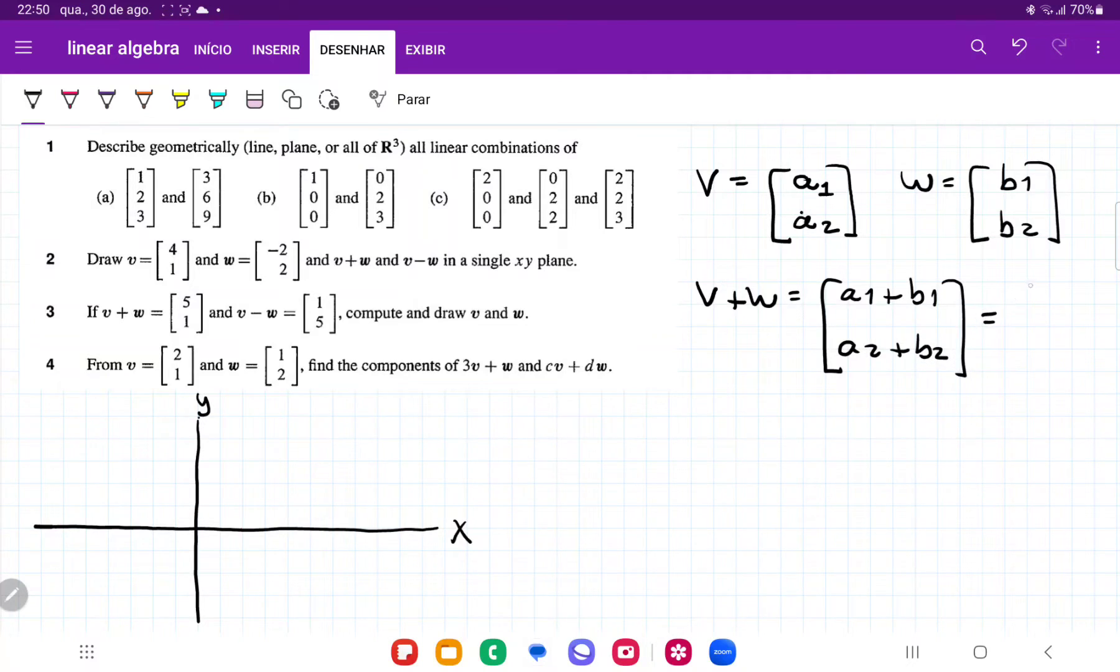And that is going to be equal to the vector that they give us is 5, 1. And so we also have here that v minus w is going to be equal to a1 minus b1 and a2 minus b2. And so that one is going to give us 1, 5.